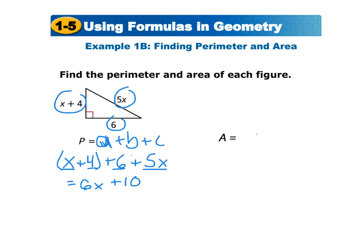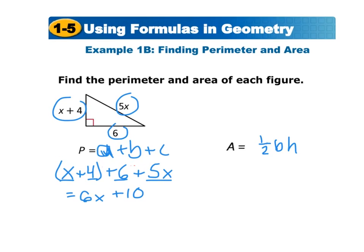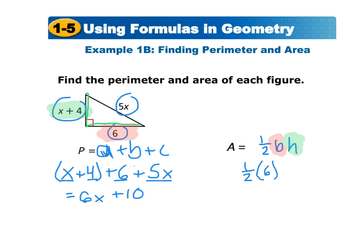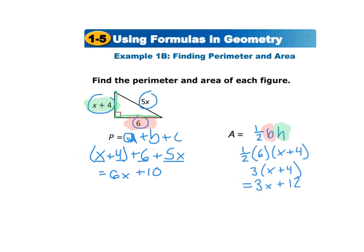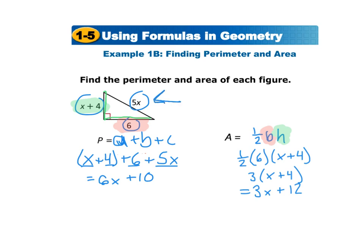For the area of that triangle, we use the formula one-half base times height. The base is 6 and the height is (x plus 4), because it forms a right angle with the base. So the area is one-half times 6 times (x plus 4), which gives 3 times (x plus 4), equaling 3x plus 12. Since no units were given in this problem, our answer has no units.